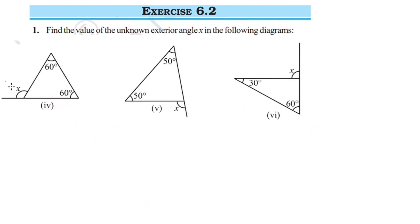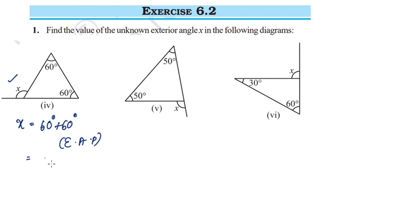Next, this is the exterior angle, and the opposite interior angles are 60 and 60. Using the exterior angle property of a triangle, x is equal to 60 degrees plus 60 degrees, which equals 120 degrees.